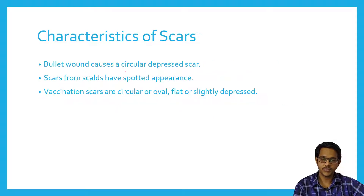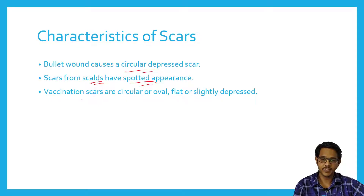Bullet wounds cause circular depressed scars. Scars caused by hot water or chemical liquids cause a spotted appearance because the liquid spills on the surface. Vaccination scars are circular or oval in shape, and flat to slightly depressed.